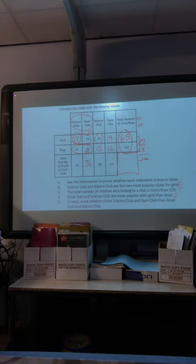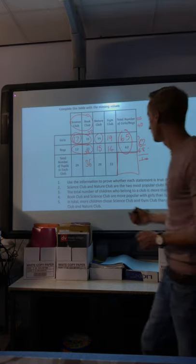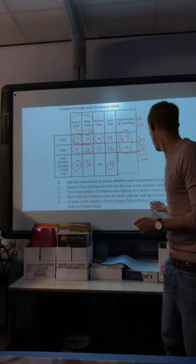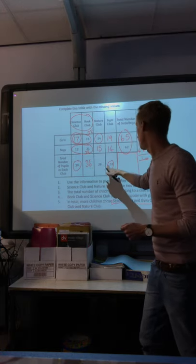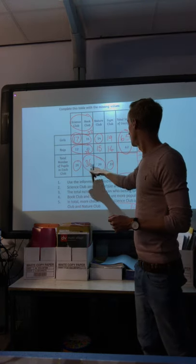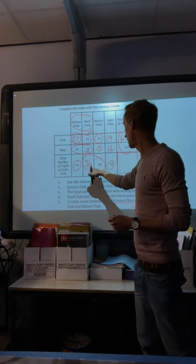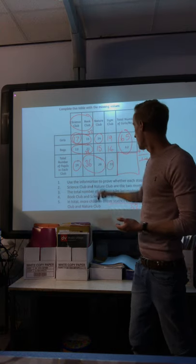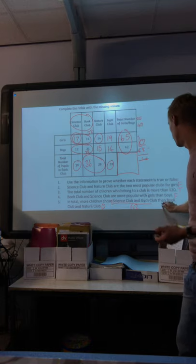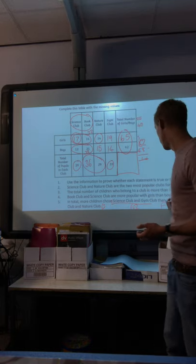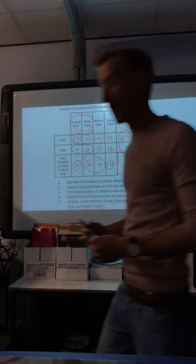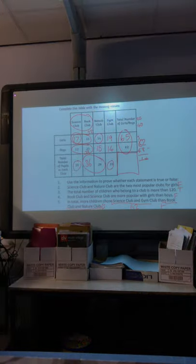In total more children chose science club and gym club. Science club and gym club, that would have a total of 62. Then book club and nature club, I'm going to add those together to get 59 add 29, 59, add the 6, 59 would be 65. False. More children chose book club and nature club. You compare yours to mine.